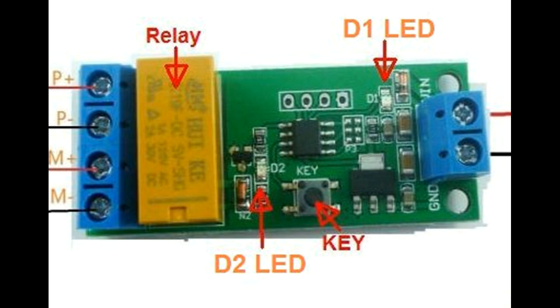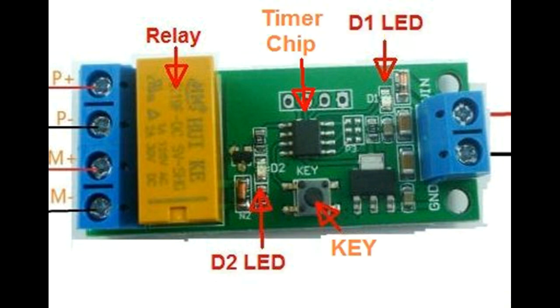Two LEDs labeled D1 and D2 will illuminate on and off during the relay operation. These LEDs are also used in programming the relay board's time delay. A timer chip regulates the duration of the relay cycle. And finally, a keypad push switch is used to program the timer chip.